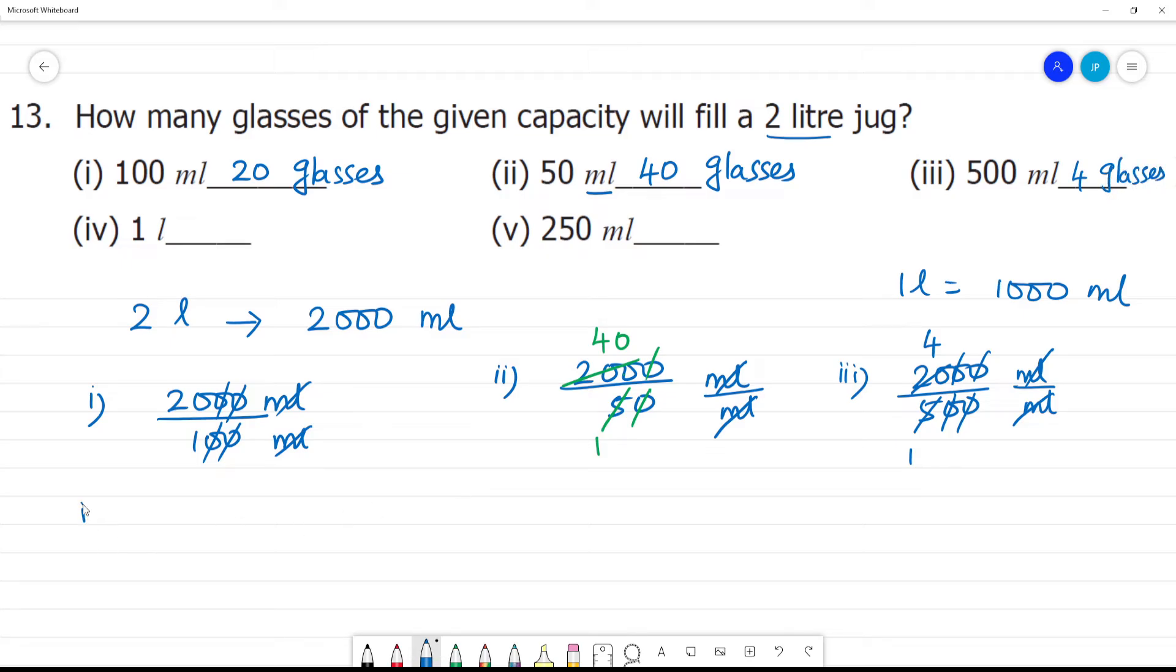Next, the 4th one is in liters. We can use liters. 2 liters divided by 1 liter. So 2 glasses. One glass of capacity 1 liter, so 2 glasses for 2 liters.